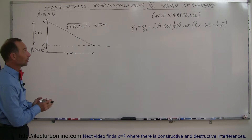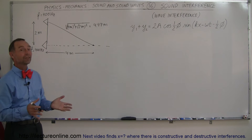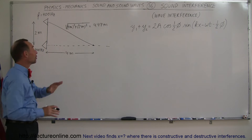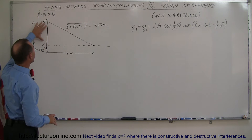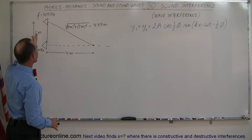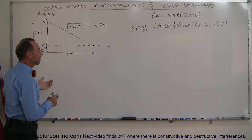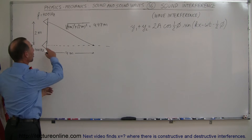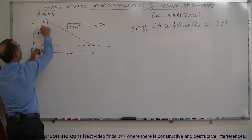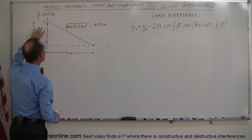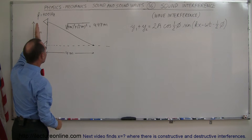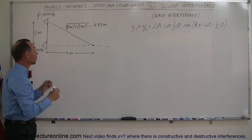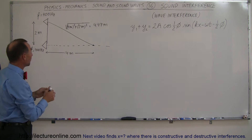In our next example with sound wave interference, we're going to look at a situation just like the previous video. We have two oscillators which put out a frequency of sound — in this case 400 Hz — and the geometry is the same. They're two meters apart and in sync, meaning the waves come out at the same amplitude, at the same time, with the same frequency.